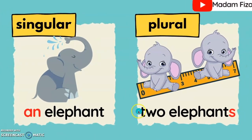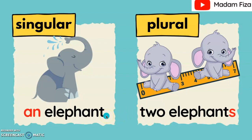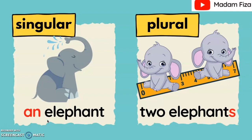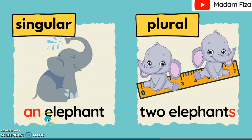Next, we have the elephant. We use 'an' because the word 'elephant' starts with the vowel sound. Kita gunakan 'an' di hadapan perkataan 'elephant' kerana perkataan elephant bermula dengan bunyi huruf vokal — bunyi huruf E. So let's read it together. An elephant. Two elephants.